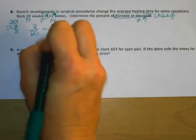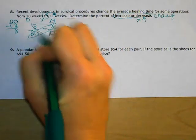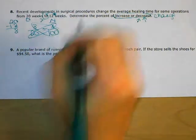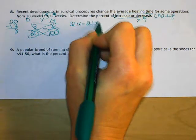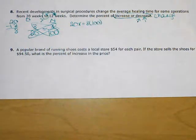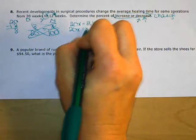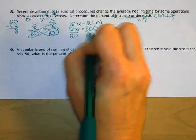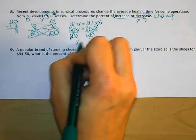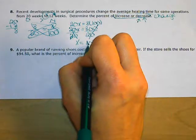Set it equal to x over 100 and cross-multiply. 20 times x equals 8 times 100. That gives 20x equals 800. Divide both sides by 20, and x equals 40%.